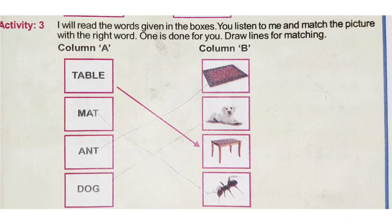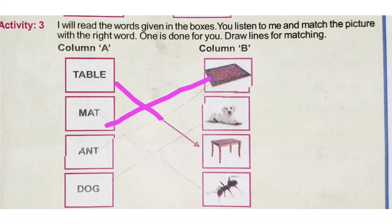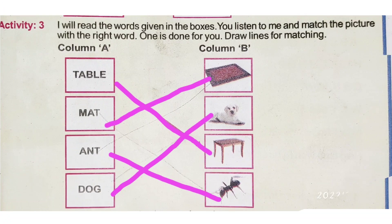Column B — I will give it to you. Look at the table. I will give it to you. Mate. Ant. Dog. All are matching for you.